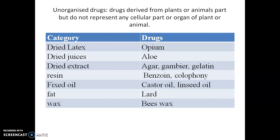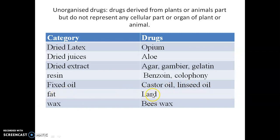Unorganized drugs are derived from plant or animal parts but do not represent any cellular part or organ, and are generally collected by unit operations including steaming, incision, extraction, or other techniques. These are classified by their nature: dried latex collected by incision — examples are papain and opium; dried juices — aloe; dried extracts — agar, gambir, gelatin; resin-containing drugs — benzoin, colophony; fixed-oil-containing drugs — castor oil, linseed oil, cod liver oil; and fat-containing drugs — lanolin wax obtained from horse, and beeswax.